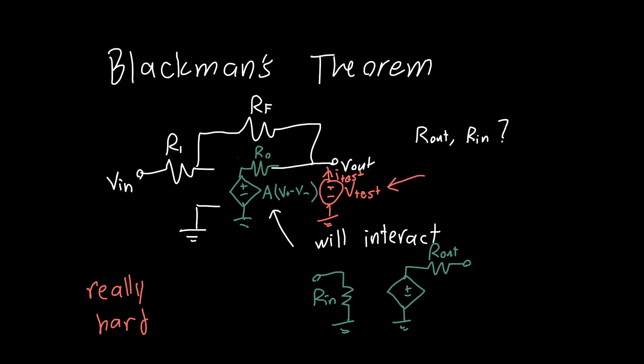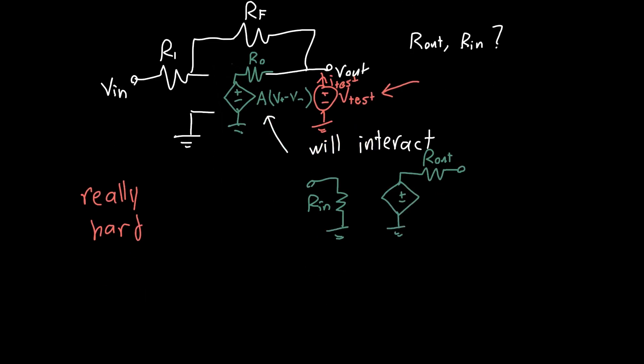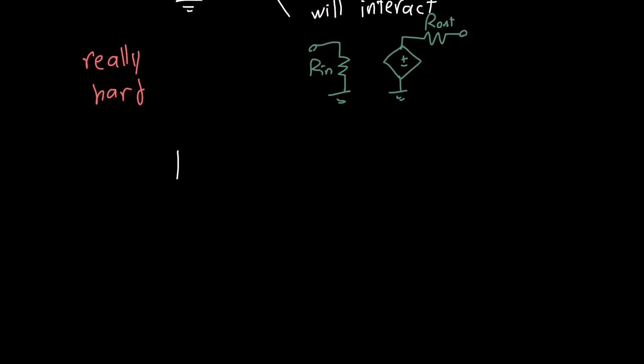It allows us to avoid analyzing feedback networks with voltages and currents. And it does that with the return ratio, r, or fancy r as I like to write it, the return ratio.